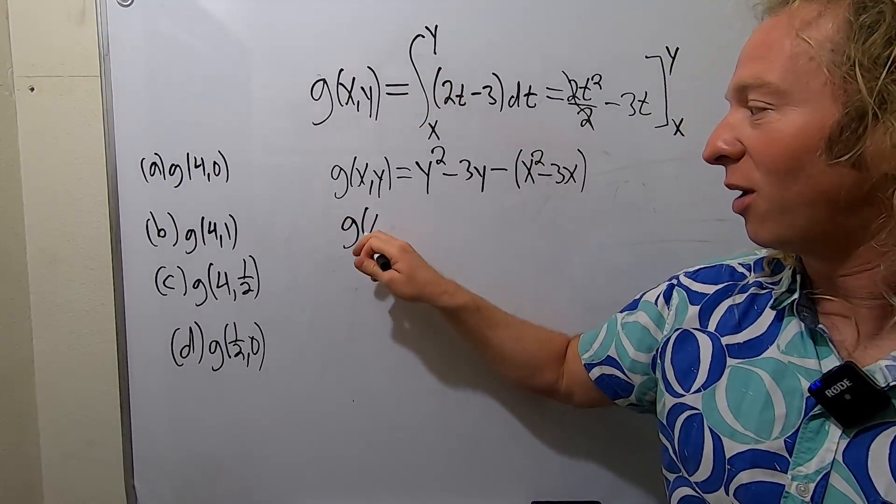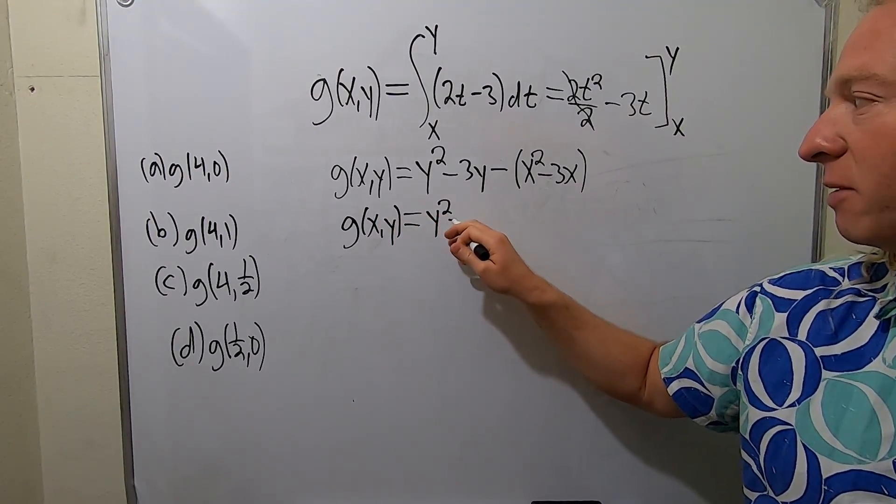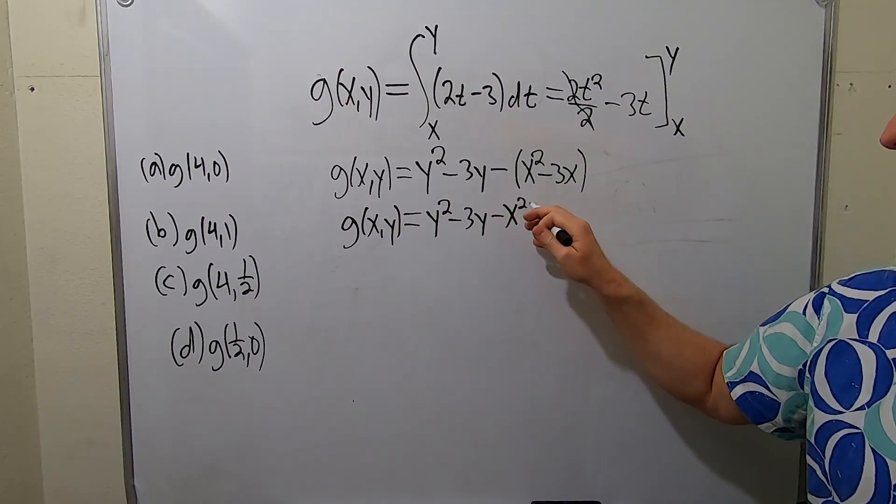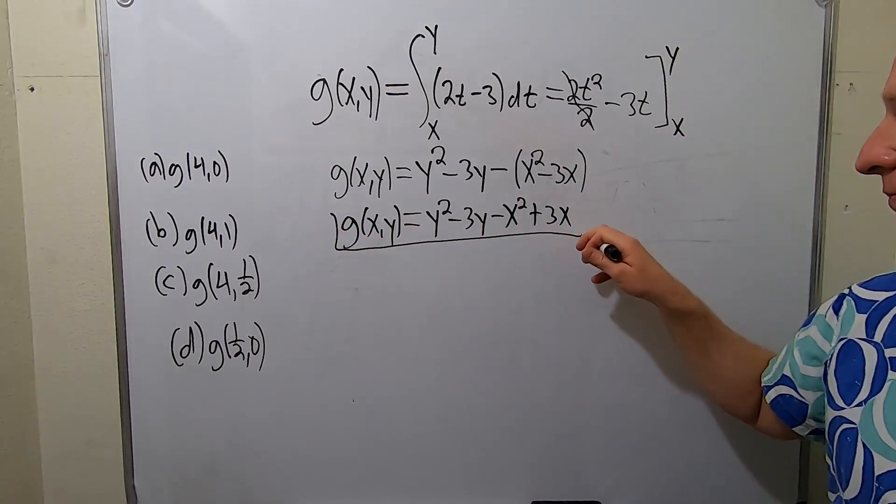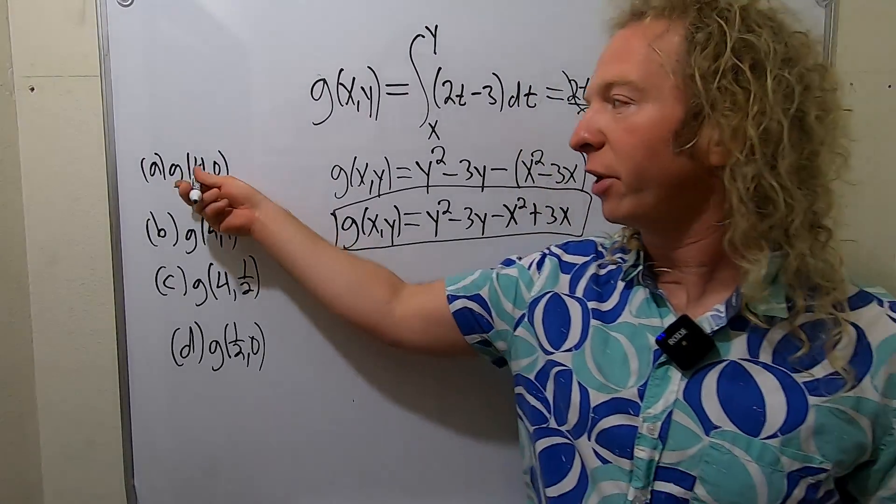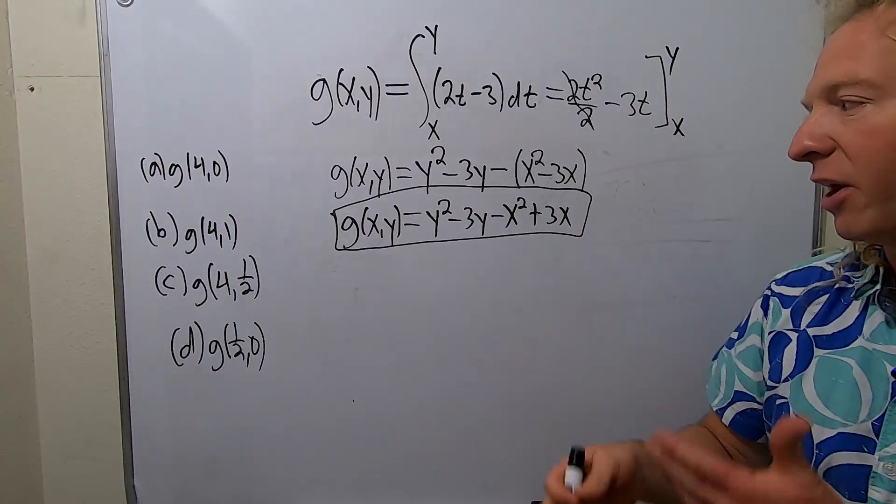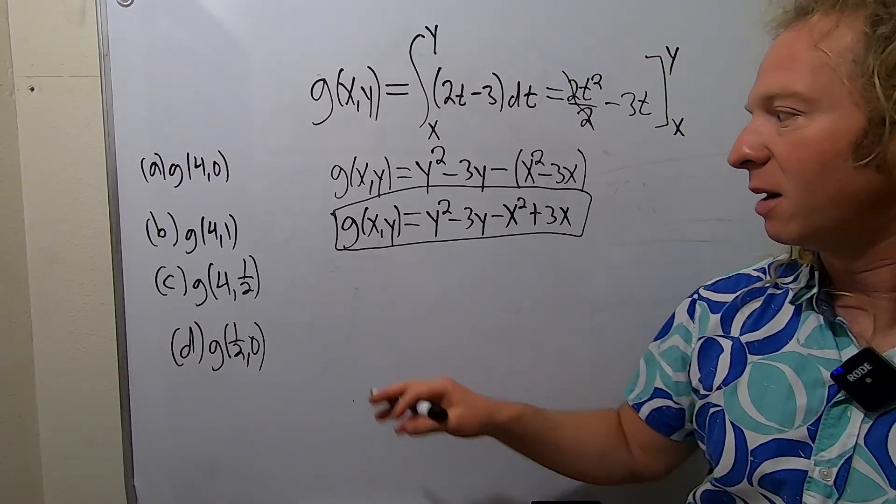So g of xy is equal to, let me just rewrite it one more time: y squared minus 3y minus x squared plus 3x. I'm going to put this in a box because this is a huge accomplishment. Now it's just a matter of plugging in the numbers and being careful. I don't have a calculator, so I'm going to try to do it all by hand and not mess up.